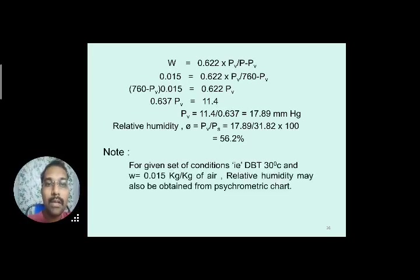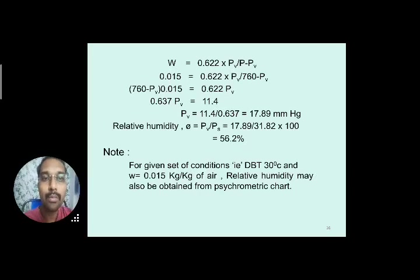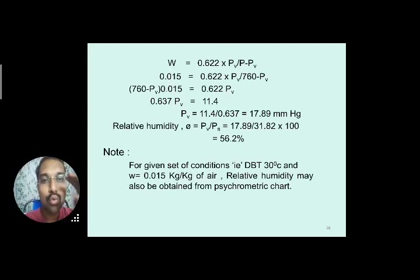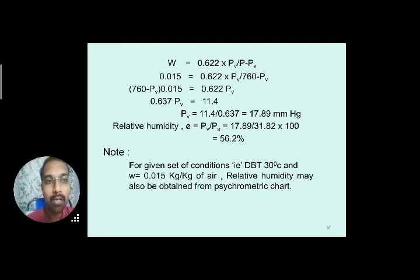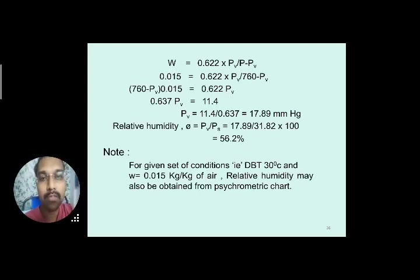Note: For a given dry bulb temperature and specific humidity, relative humidity may also be obtained from the psychrometric chart. If you know any two factors, you can find all other psychrometric properties. The mathematical formula φ = Pv/Ps gives the same answer as reading directly from the chart.